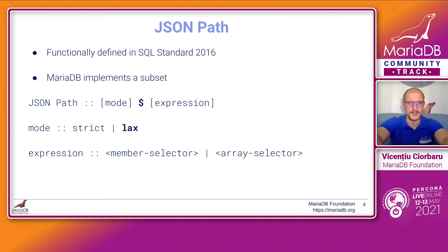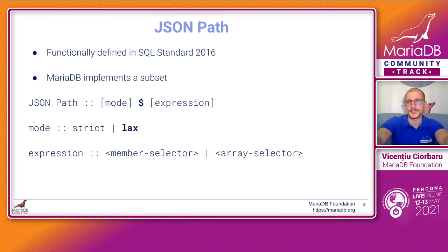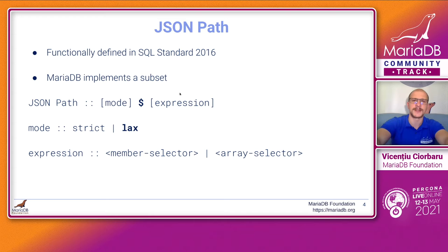The functionality is practically defined in the SQL standard of 2016, or at least that's the one we used when we based our implementation. Note that there are many examples of JSON path on the internet, but not all of them comply to the SQL standard definition. So whenever I describe JSON path, do note that I am referring to MariaDB's implementation, which is a subset of the SQL standard. Traditionally, JSON path starts with an optional mode flag, which tells it which mode to compile and use. Then we have a context selector called the dollar sign. Finally, given the context, we have an expression that specifies which elements to get from the current context. We have a member selector for JSON objects and an array selector for JSON arrays. Note that we do not support strict mode.